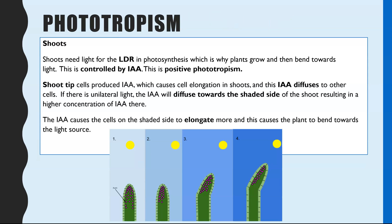Tropisms — the first key one we're going to look at is phototropism, 'photo' meaning light, so this is the response to light. You need to know why plants need light in the first place; this links to the light-dependent reaction in photosynthesis — I'll link my video on the LDR so you can see how light is needed in photolysis and in the photo-ionization of chlorophyll. This is why plants need light, so it is in their favor to grow and bend towards a light source, and this is controlled by IAA — it's an example of positive phototropism.